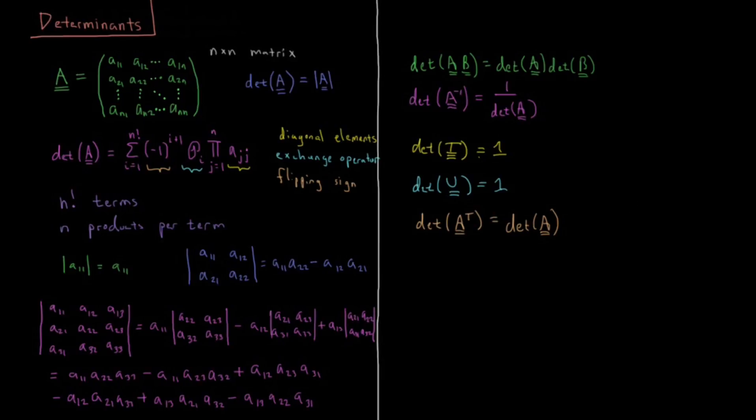What if we have a scalar multiple times our matrix? So the determinant of alpha times A. Well, in that case, we're multiplying every single element by A. So in that case, in our product, every single one of these products has alpha in it. So we're multiplying alpha n times, and it shows up in every single term. So what we're doing is multiplying times alpha to the n for whatever our determinant is. So that equals alpha to the n times the determinant of A.